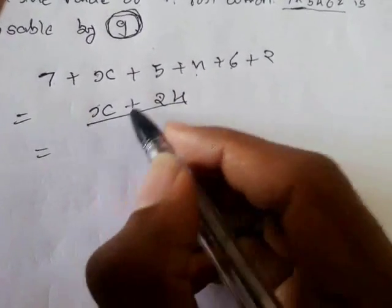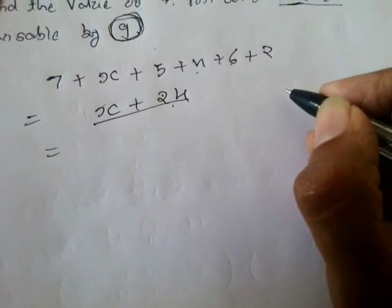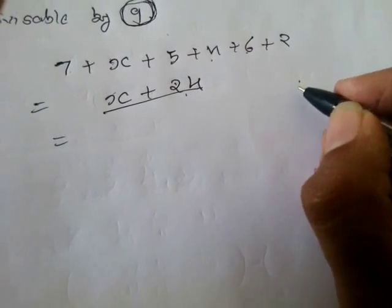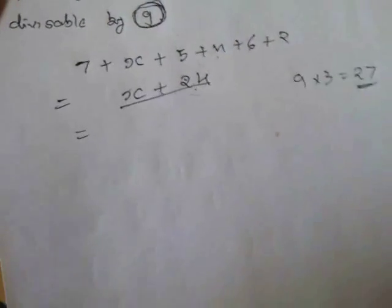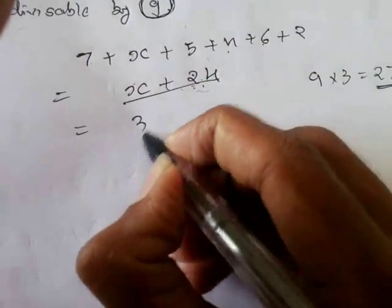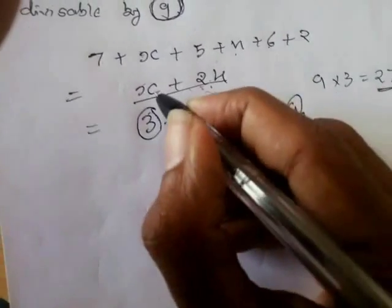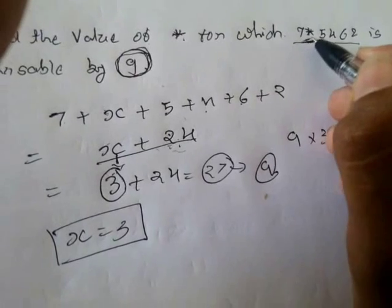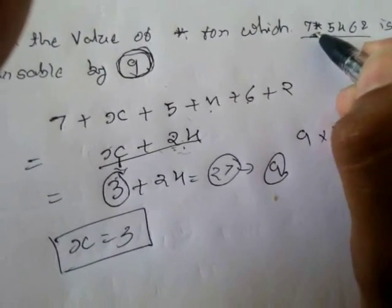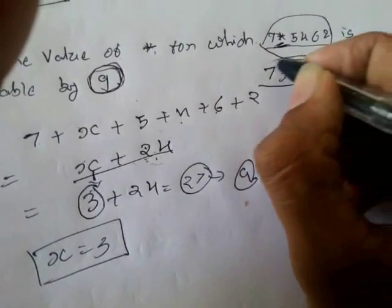What number should be added to 24 to make it divisible by 9? The least multiple of 9 after 24 is 27. So we add 3 to 24 to get 27, which is divisible by 9. Therefore x equals 3, and the star is 3. The number becomes 735462, which is divisible by 9.